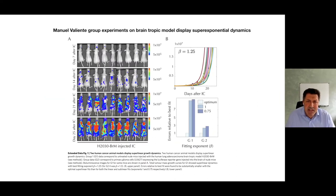For brain metastases, we have results on the brain tropic model that Mihaela was presenting just a couple of talks ago. Manuel Valiente did the experiments. Again, we found in these animal models super-exponential dynamics, growing faster than exponential, so beta larger than 1.